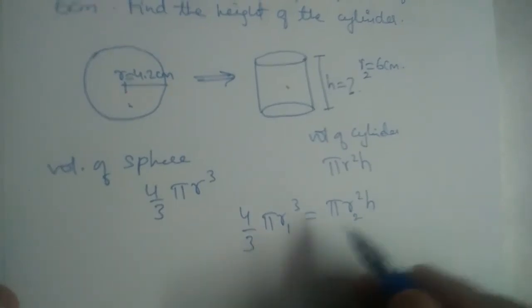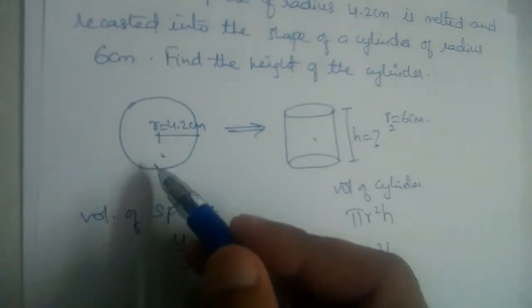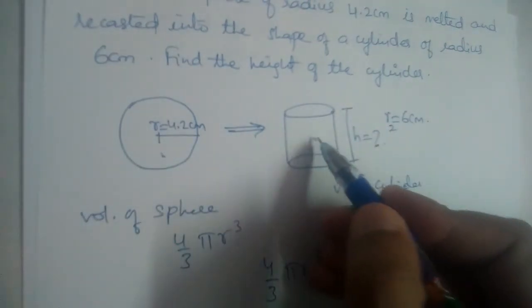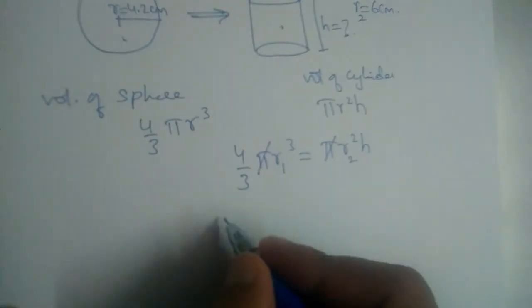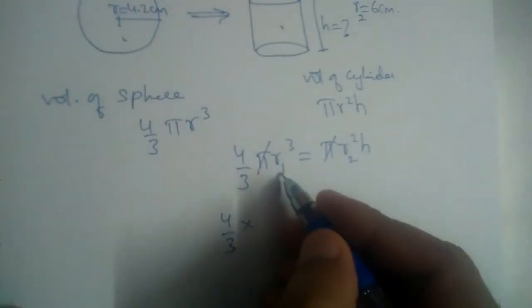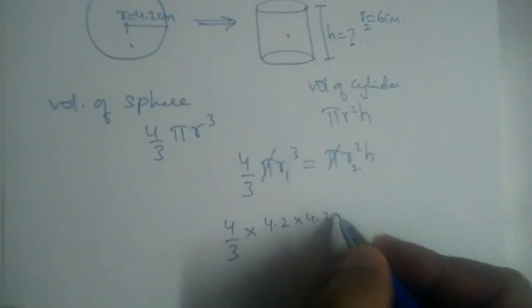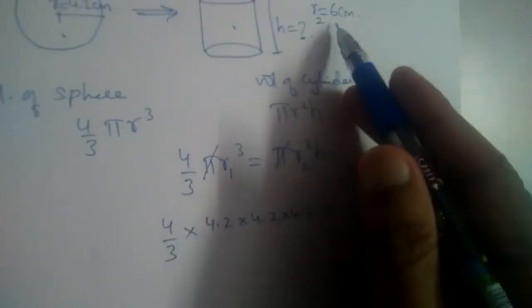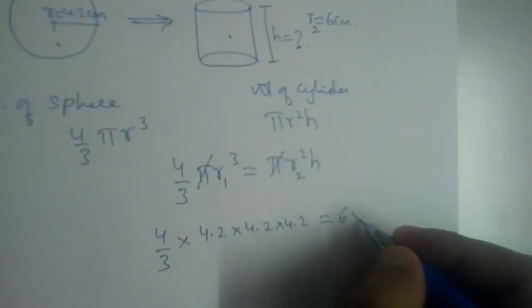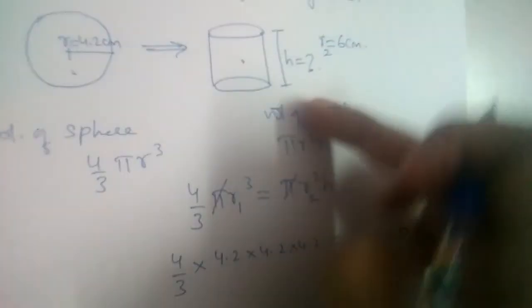We are equating the two volumes because the volume of the sphere before melting will be equal to the volume of the cylinder. If we equate them, pi and pi get cancelled. Substituting the values: 4/3 × (4.2)³ = (6)² × h. We need to find h.